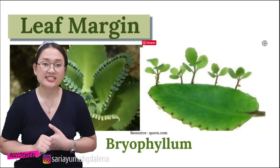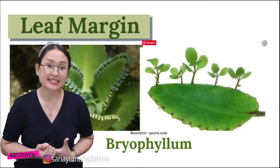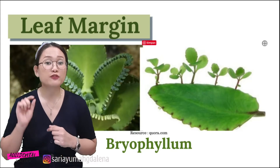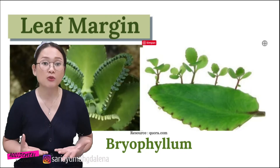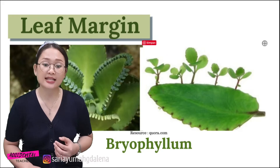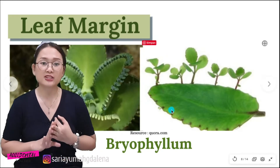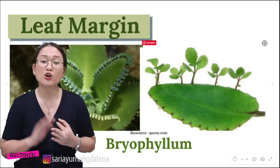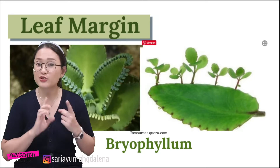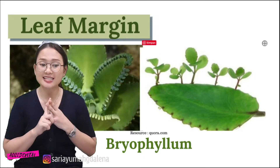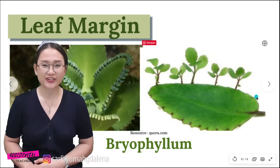Next is leaf margin. Some plants like bryophyllum grow new plants from the leaf. If you take the leaf and put it on the soil, it will grow into a new plant from the sides of its leaves. So those are the three methods that non-flowering plants use to reproduce: spores, buds, and leaf margin.